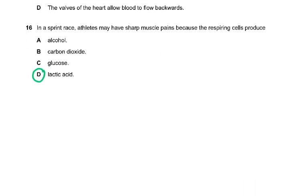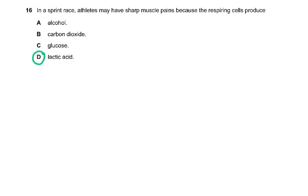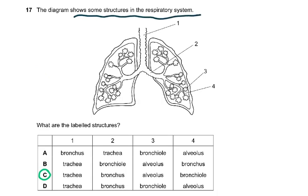Question sixteen: in a sprint race, athletes may have sharp muscle pain because respiring cells produce lactic acid, which lowers the pH and results in muscle cramps. Question seventeen: the diagram shows structures in the respiratory system. Structure one is the trachea, two is the bronchus, three is the alveolus, and four is the bronchiole.